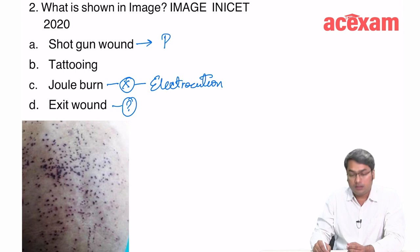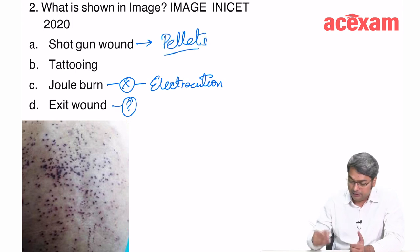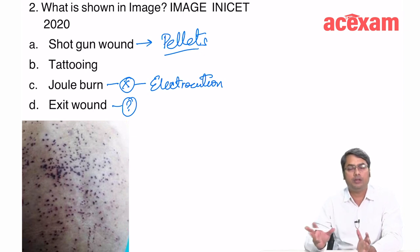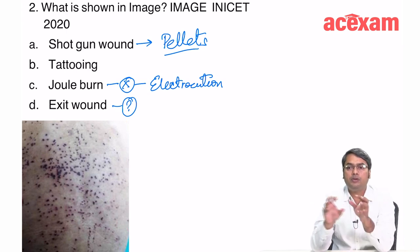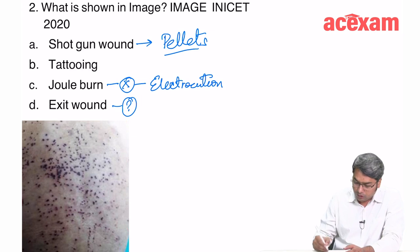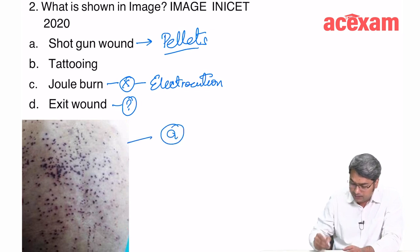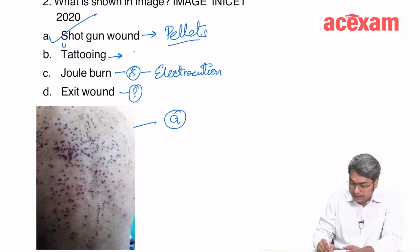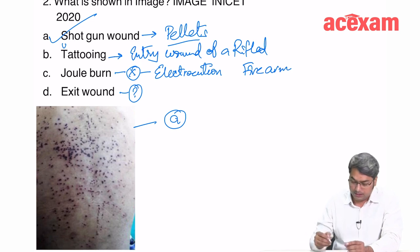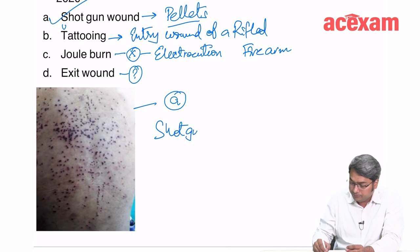This is a shotgun wound. A shotgun fires pellets; if firing is at a distance of more than 2 metres, dispersion starts. At more than 4 metres, the pellets are completely dispersed. Tattooing is seen in entry wounds of rifled firearms, not in shotgun wounds. So this image shows a shotgun wound from a distant range — more than 4 metres.